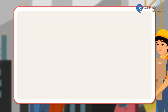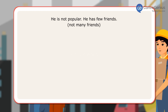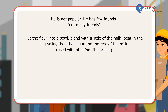Let us look at a few examples. He is not popular — he has few friends, meaning not many friends. Put the flour into a bowl and blend with a little of the milk. Beat in the egg yolks, then the sugar and the rest of the milk.